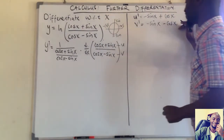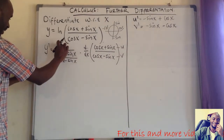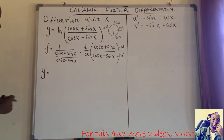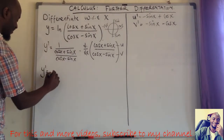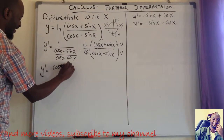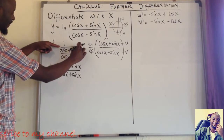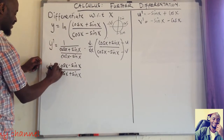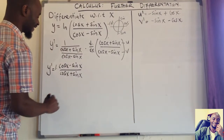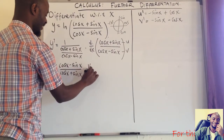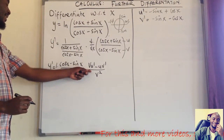Now we have u prime and v prime, so we can apply the quotient rule, which we discussed in the previous videos. y prime becomes: since we are dividing by the fraction, we can multiply by its reciprocal. So this becomes 1 multiplied by the reciprocal of (cos x + sin x)/(cos x − sin x), which is (cos x − sin x)/(cos x + sin x). Then we apply the quotient rule: v·u prime minus u·v prime, all over v squared.